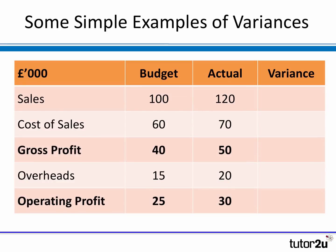Let's look at a simple example of how to calculate a variance. On the table we have a summary of financial information for a business showing sales, cost of sales, gross profit, and overheads, giving operating profit. There are two columns — budget (the forward-looking plan) and actual (what actually happened). Sales were actually £120,000 compared with the budget of £100,000, so sales were higher than budget — a favorable variance of £20,000. Cost of sales were also higher than budget by £10,000, and if costs are higher than budget that's an adverse variance of £10,000.